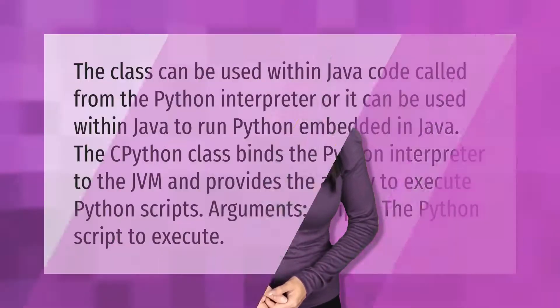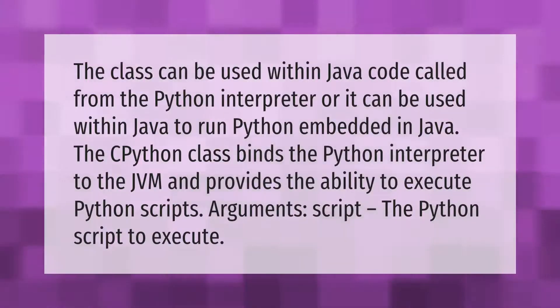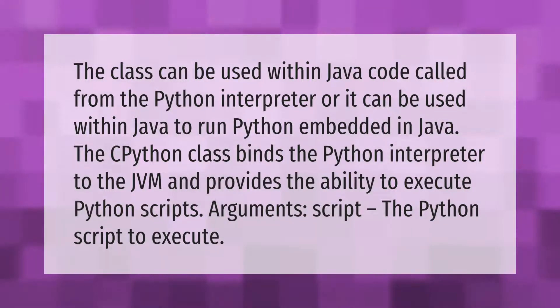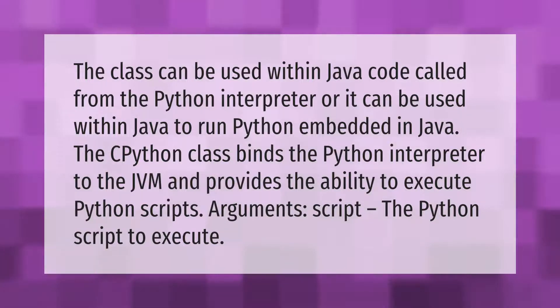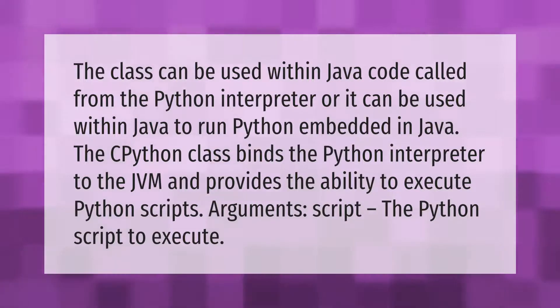The class can be used within Java code called from the Python interpreter, or it can be used within Java to run Python embedded in Java. The CPython class binds the Python interpreter to the JVM and provides the ability to execute Python scripts, taking the script to execute as an argument.